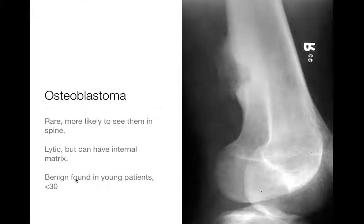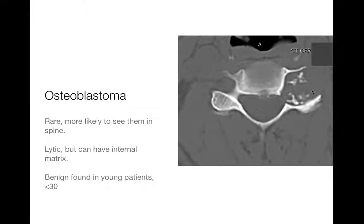Next up, osteoblastoma — a pretty rare tumor you're unlikely to see. If you do see one, you'll probably see it in the spine. They're generally lytic but can have internal matrix, and occur in young patients. A much more typical example is one occurring in the spine — an expansile lytic lesion with matrix inside. Spine is the more common location.